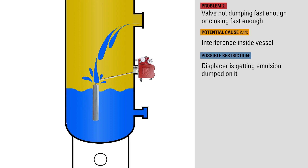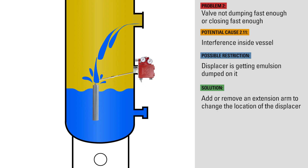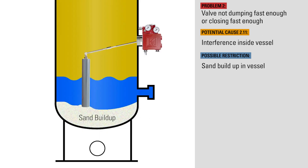If the displacer is located where it's getting emulsion dumped on it, this could cause erratic actuations from the controller. To remedy this, if there's room in the vessel, add or remove an extension arm to change the location of the displacer. If there's a lot of sand in your system, it can build up inside the vessel over time to the point where it restricts the downward movement of the displacer. In this case, you'll need to shut in the vessel and remove the sand.